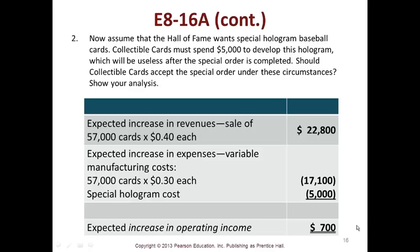Now assume that Hall of Fame wants special hologram baseball cards. In this instance, you must spend $5,000 to develop the hologram. Here's your increase in sales — 40 cents times 57,000 cards — but then you have an additional fixed cost of $5,000, so now you're down to $700 in operating income. The question is whether you'll do more of these ongoing or if this is a one-time situation.